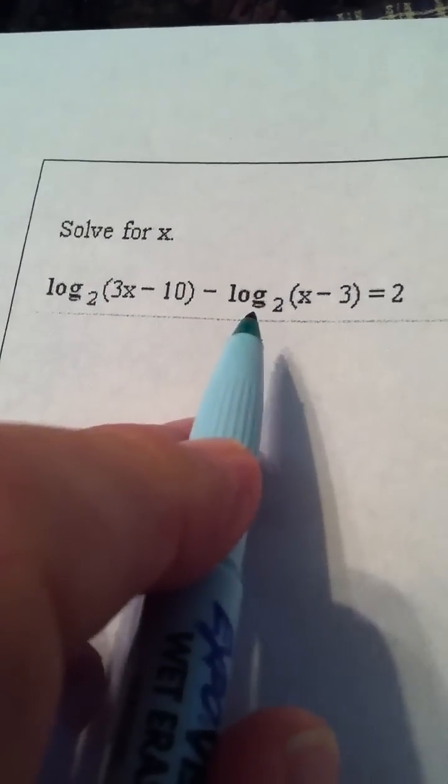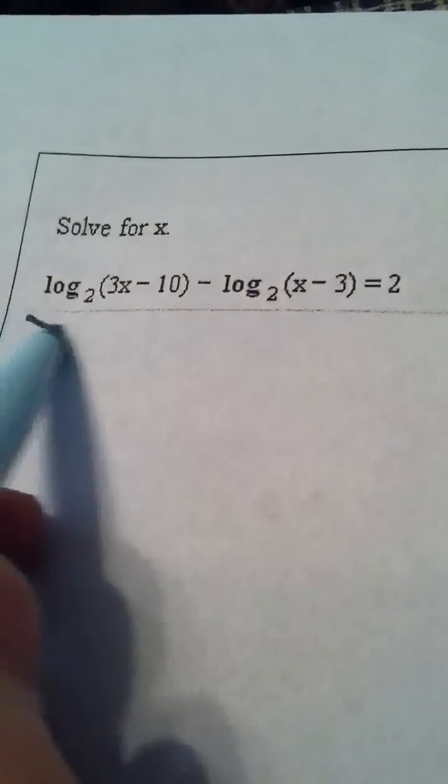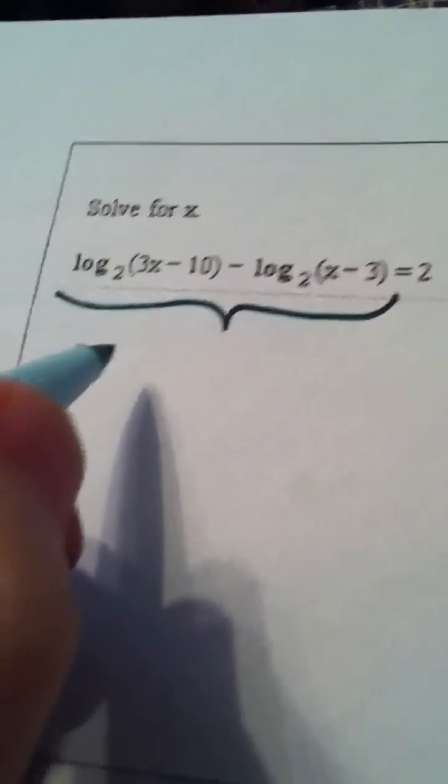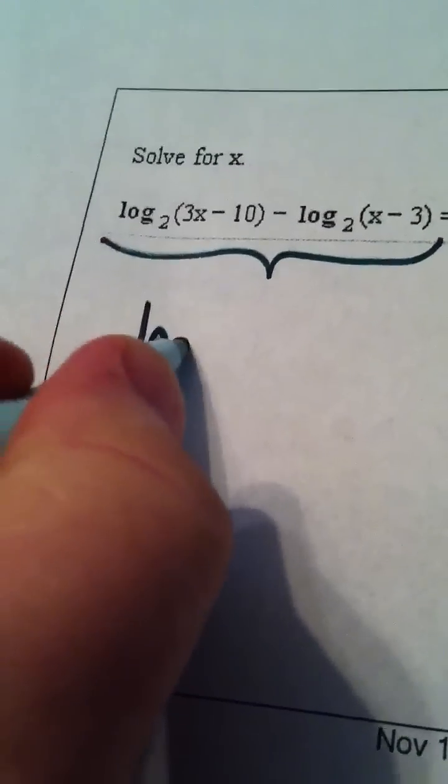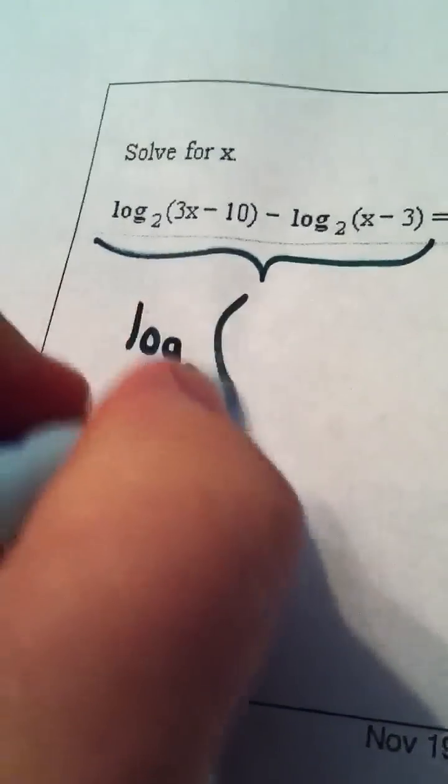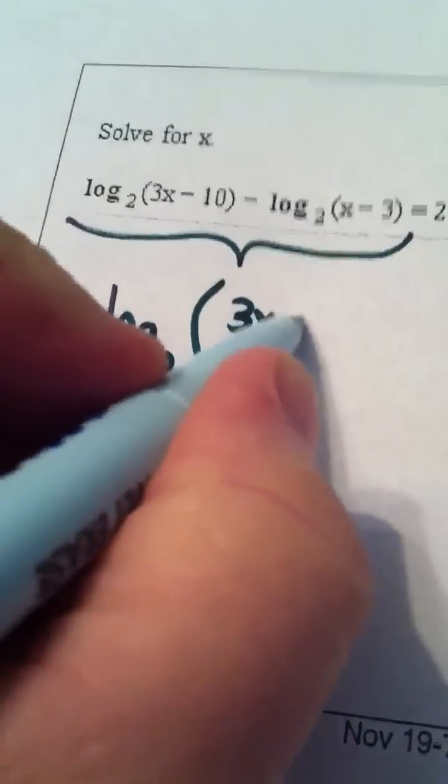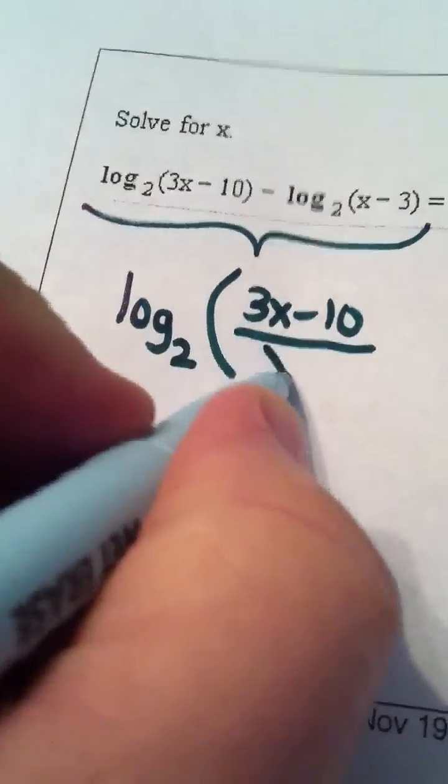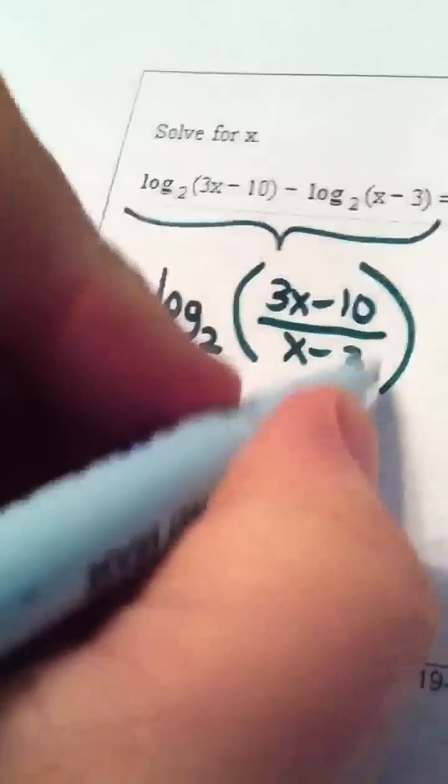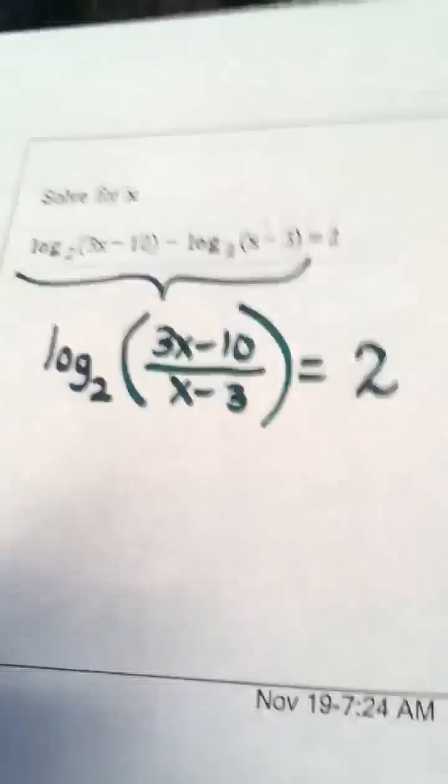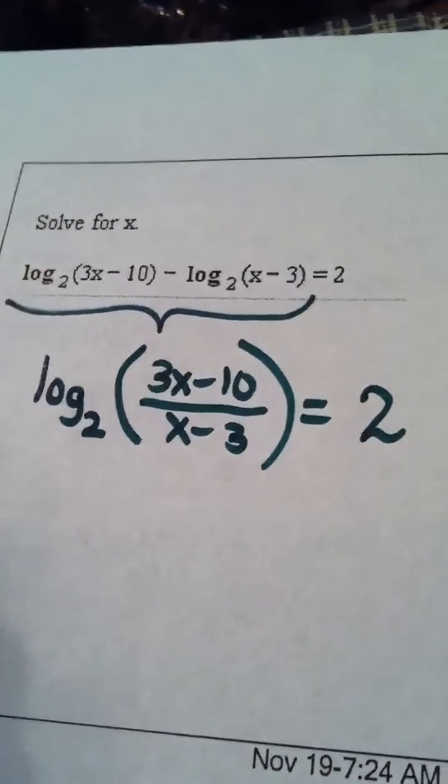So this becomes the single log base two of the quotient 3x minus 10 on the top, x minus 3 on the bottom, and this is equal to 2. So my first step was to apply the quotient rule.